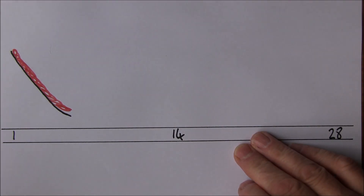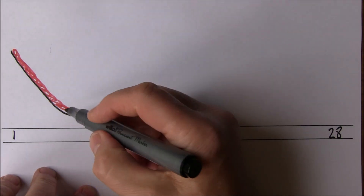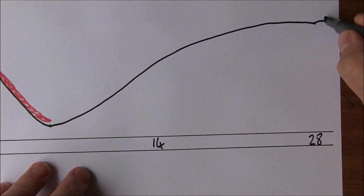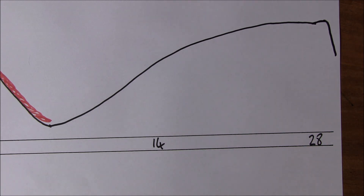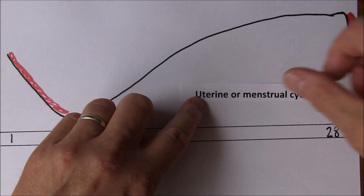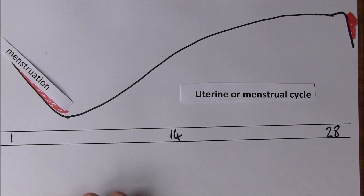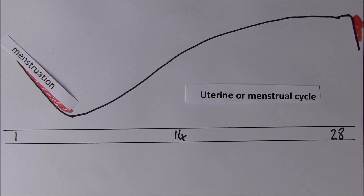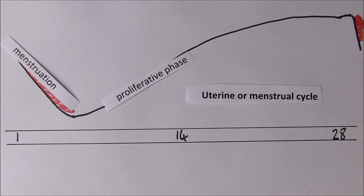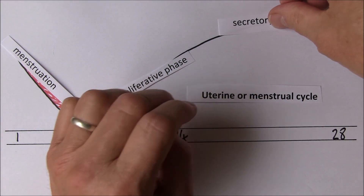After that, in the uterine menstrual cycle, there's going to be a build-up in the thickness of the endometrium, getting thicker towards the end of the month. Then there's a drop-off again at the end of day 28 as we have the onset of the next menstruation. The first part is menstruation, then an increase in the thickness of the functional layer — this is called the proliferative phase because it occurs as a result of mitosis. Then the last part is called the secretory phase.